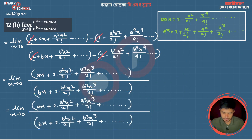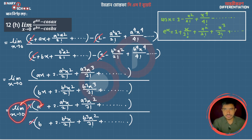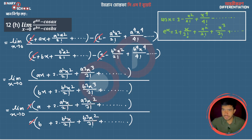Now if we take x as a common factor — since x appears in every term of both numerator and denominator — we can cancel one power of x from top and bottom, simplifying the expression to evaluate the limit.